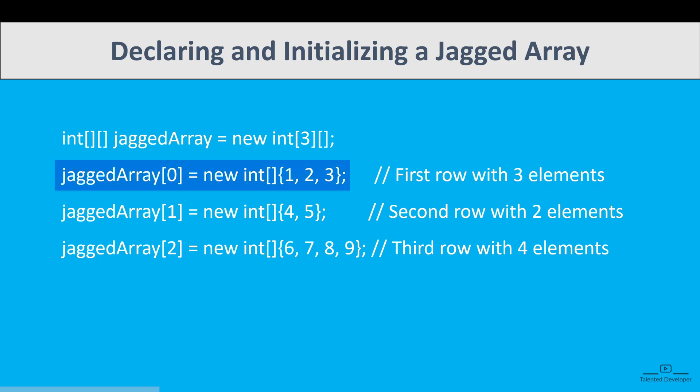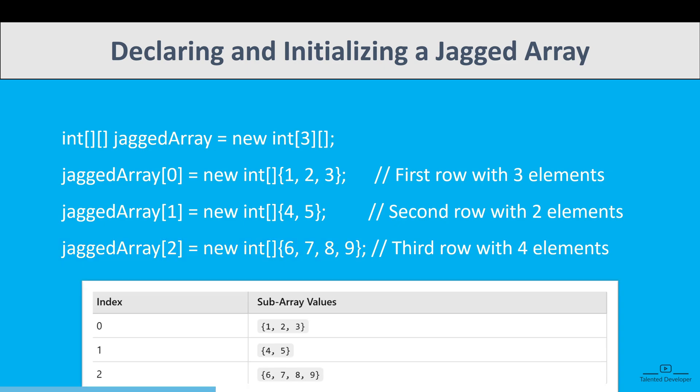If I'm going to put the data as you can see on your screen, the first sub-array—jagged array index 0—is assigned an array of size 3 containing the values 1, 2, 3. Similarly, the second sub-array—jagged array index 1—is assigned an array of size 2 containing the values 4, 5. And jagged array index 2, the third sub-array, is assigned an array of size 4 containing the values 6, 7, 8, 9.